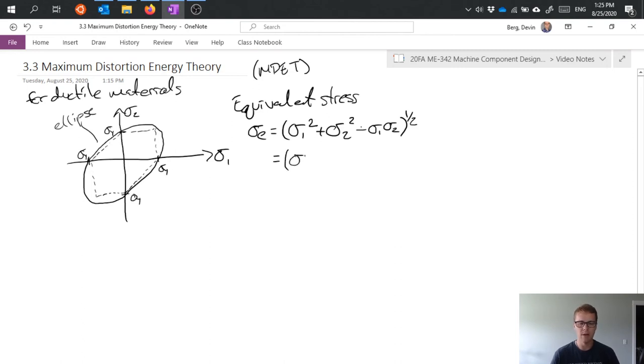And the equation ends up looking like this: sigma x squared plus sigma y squared minus sigma x sigma y plus three tau xy squared, all under a square root. And that ends up being the same thing.